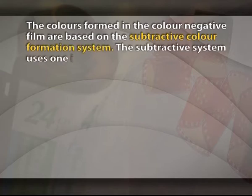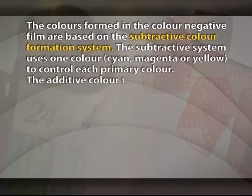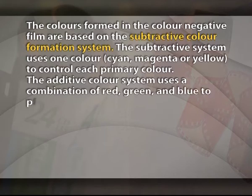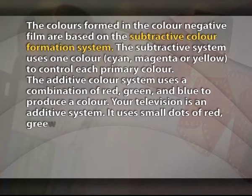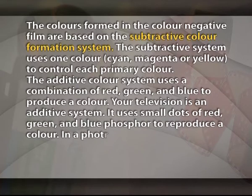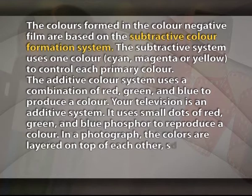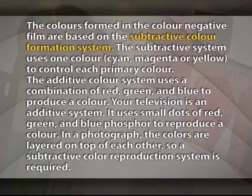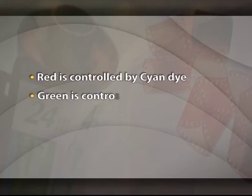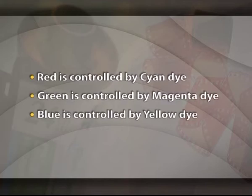The colors formed in the color negative film are based on the subtractive color formation system. The subtractive system uses one color — cyan, magenta, or yellow — to control each primary color. The additive color system uses a combination of red, green, and blue to produce a color. Your television is an additive system; it uses small dots of red, green, and blue phosphor to reproduce a color. In a photograph, the colors are layered on top of each other, so a subtractive color reproduction system is required. Red is controlled by cyan dye, green is controlled by magenta dye, and blue is controlled by yellow dye.